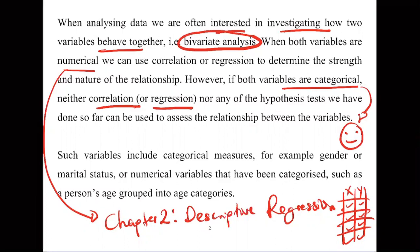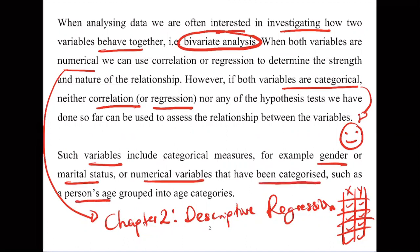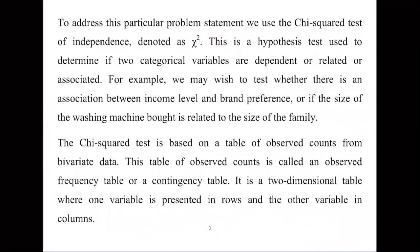To assess the relationship between categorical variables — for example, gender and color preference — we use the chi-square test. Gender and marital status are categorical variables, as are numerical variables that have been grouped into categories, such as a person's age divided into age groups. To find relationships between such variables, that's where chi-square comes in.